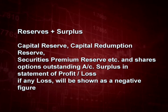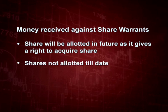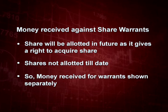Under shareholder funds, the next point is reserve and surplus, consisting of capital reserve, capital redemption reserve, and security premium reserve — previously known as share premium account — and share options outstanding account. Any surplus in the statement of profit and loss will be shown here; if there is a loss, it will be shown as a negative figure, and the profit and loss debit balance will be deducted from this figure. The next point under share capital is money received against share warrants, which gives the right to acquire shares in the future. Since the shares are not allotted till date, whatever money has been received for the warrants should be shown separately under this head.